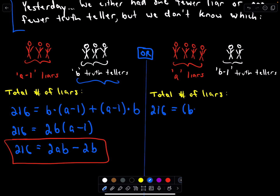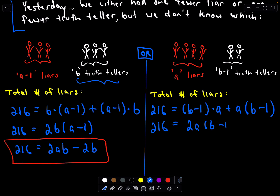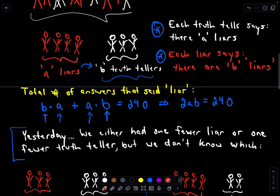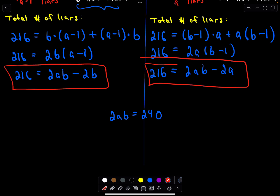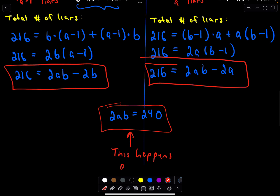In the second case — one fewer truth teller — each of the B minus one truth tellers truthfully tells us there are A liars, and each of the A liars lies and says those B minus one truth tellers are in fact liars. Combining this expression gives 2 times A times (B minus one), or 216 equals 2AB minus 2A. So I now have two possible equations for yesterday, and I know today's equation 2AB equals 240 for certain.